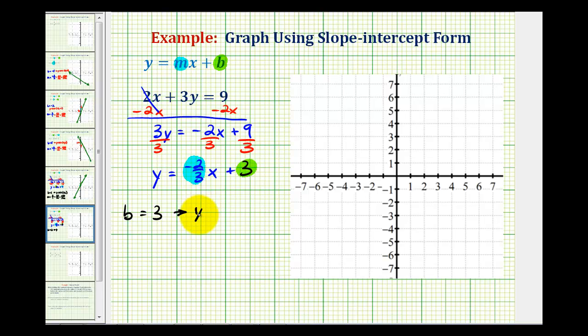So if b is equal to positive 3, that tells us the y intercept would be the point (0, 3). And if m is equal to negative 2/3rds, this tells us the change in y with respect to the change of x, or the rise over the run.